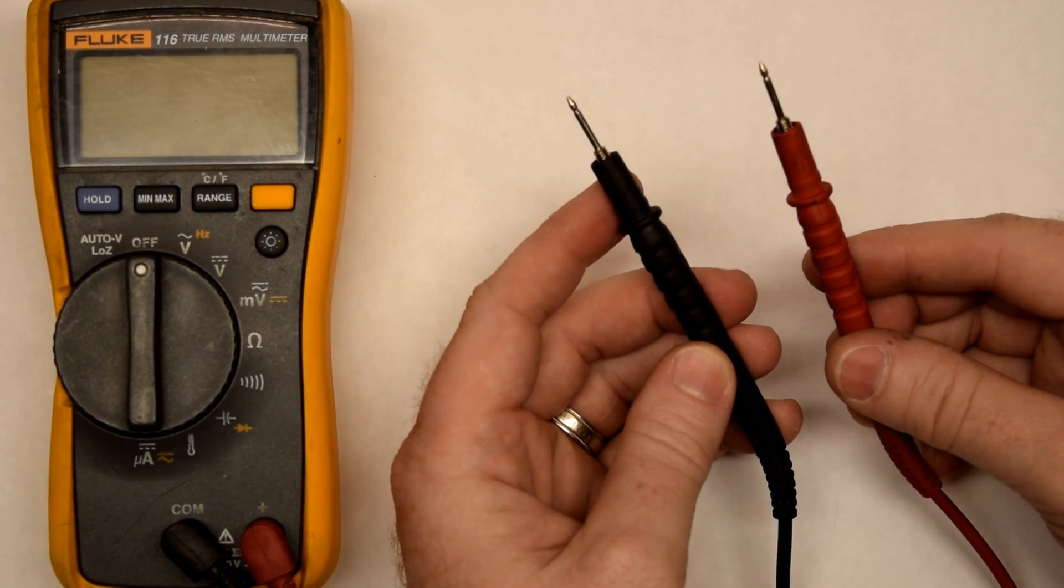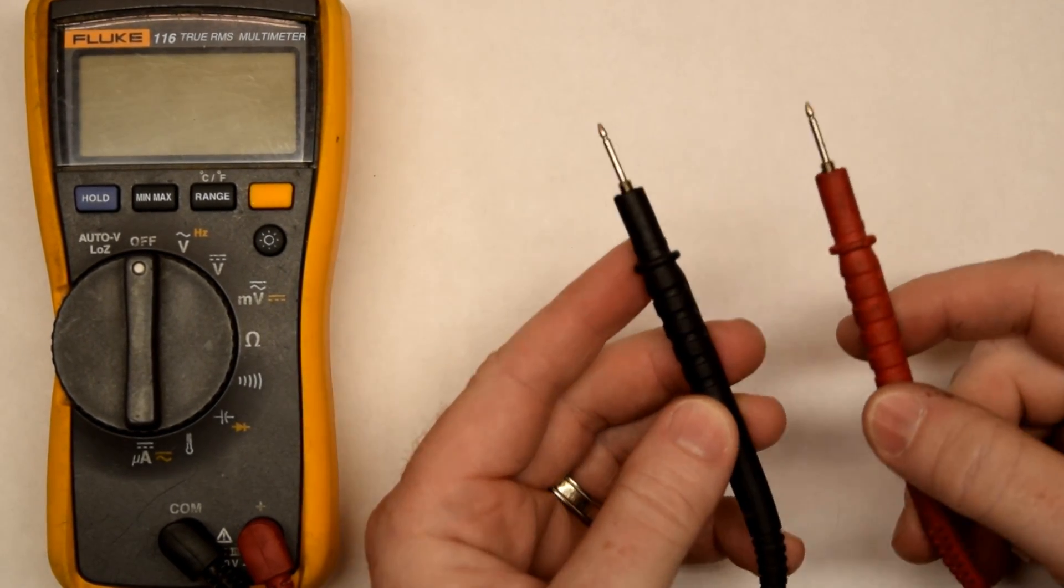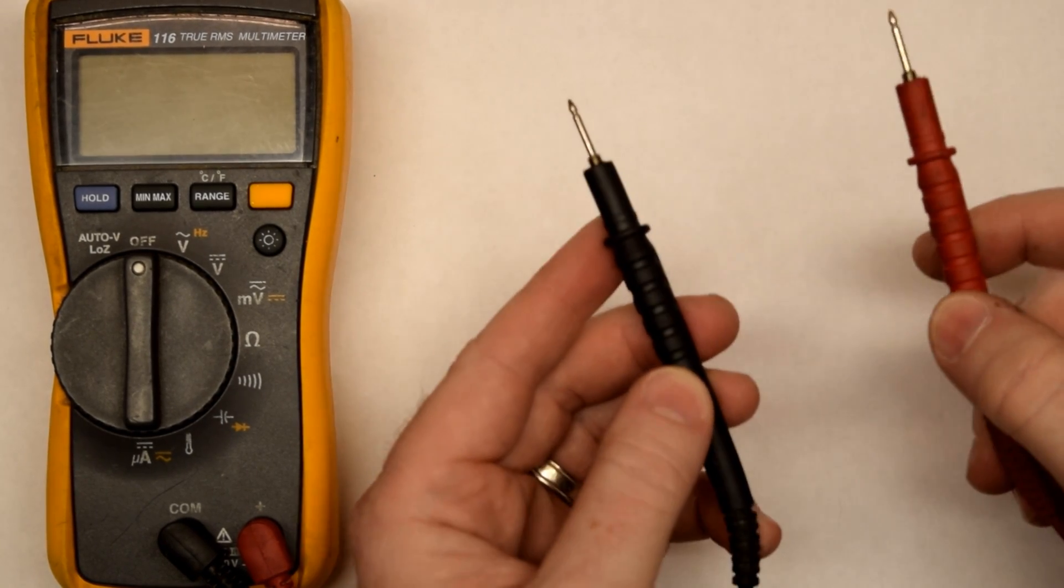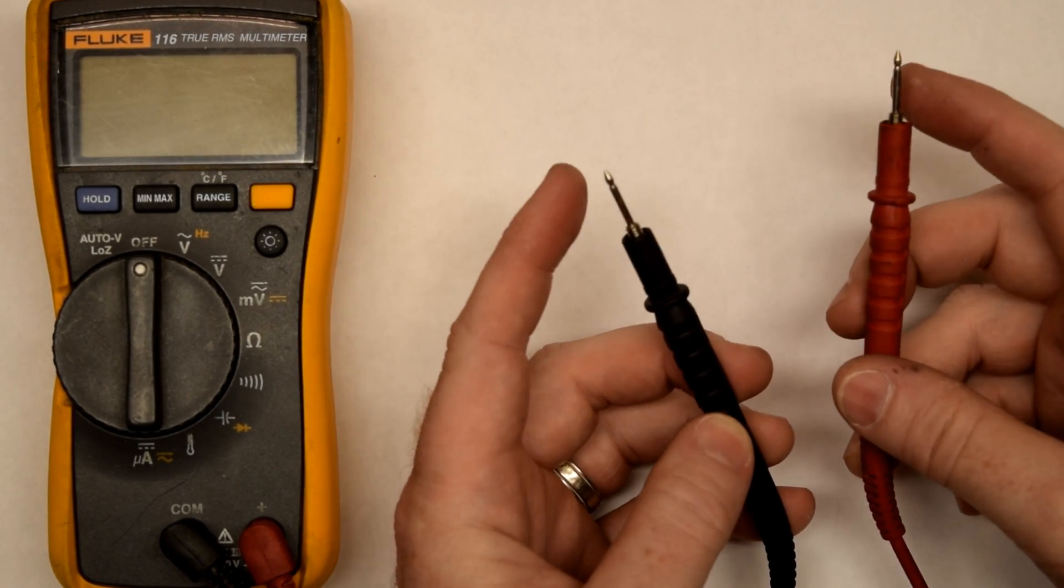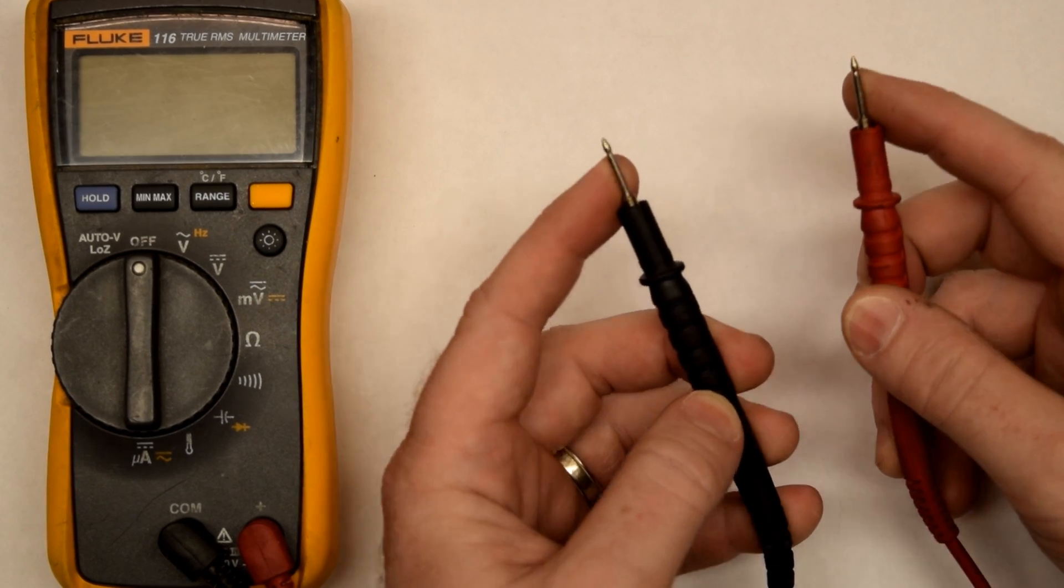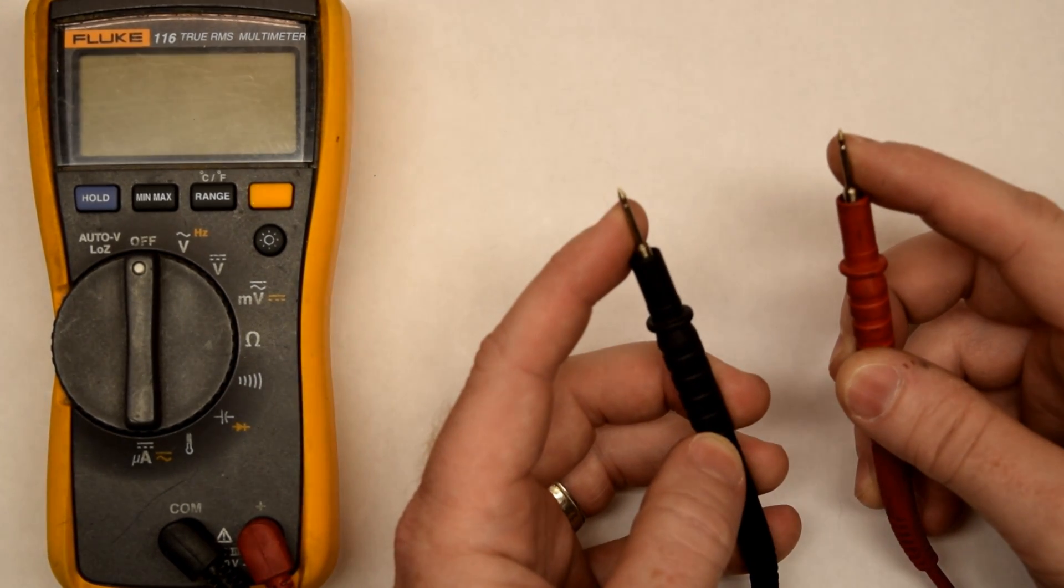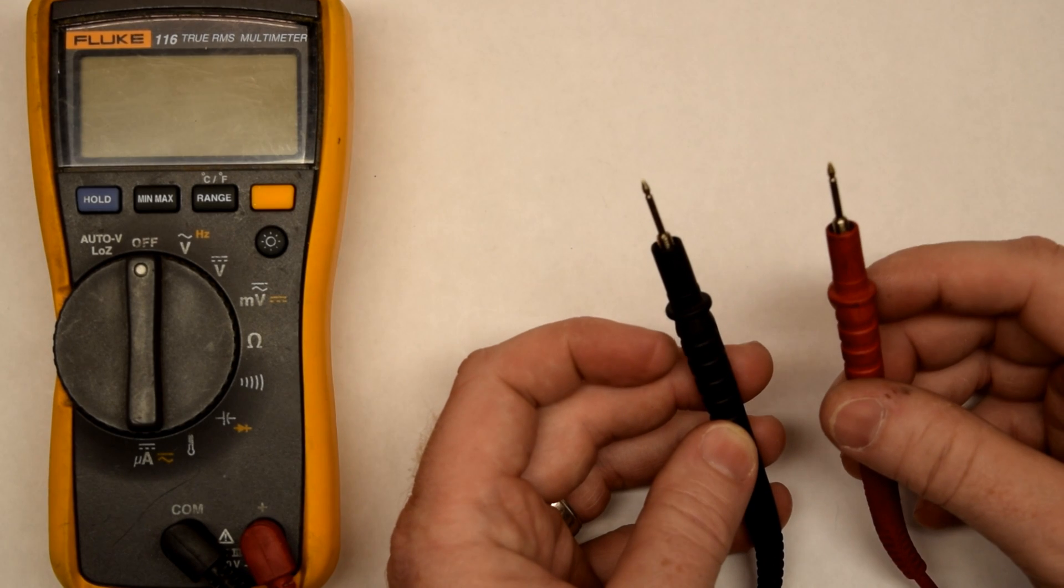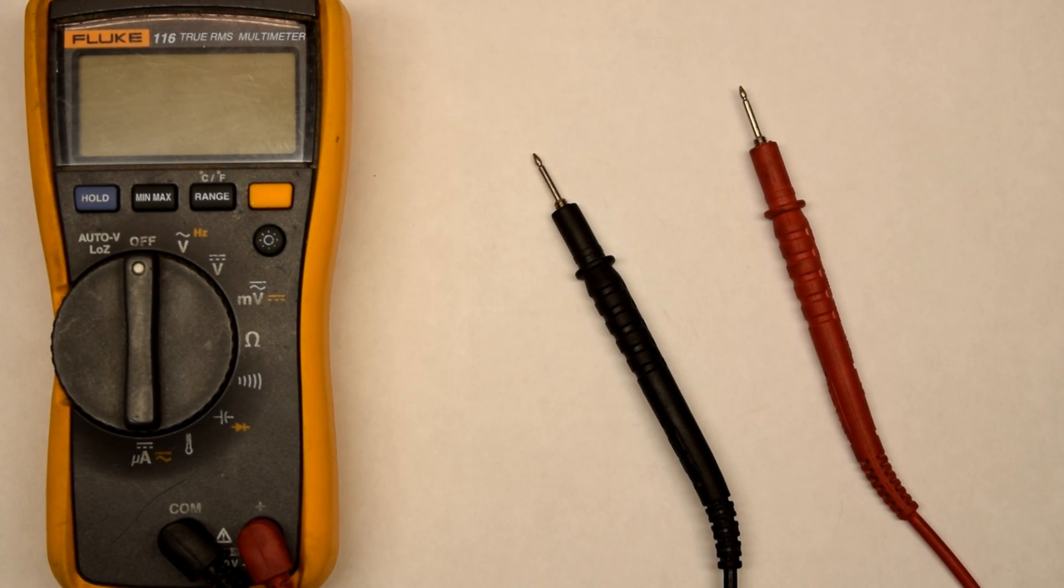These are your leads for your meter. This is what we're actually going to be sticking into the socket or touching live voltage with. So these metal pieces, obviously do not touch these while you're doing the testing. Electricity will run through you and not your meter, and that would cause a bad day.